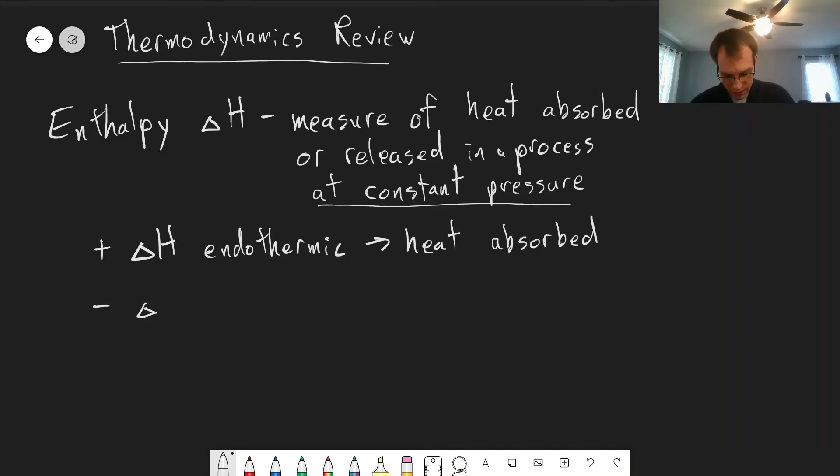A negative delta H we call an exothermic process. Most chemical reactions, but not all, fall under this category. Most chemical reactions are exothermic and they release heat into their environment. If you think about an explosion, that's a pretty obvious example of an exothermic reaction because it heats everything up around it very quickly. But many other reactions also involve releasing heat into the environment.